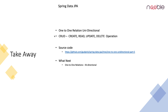Now the main takeaways: we have spoken about one-to-one relation which is unidirectional, we have spoken about the entire CRUD operations which is create, read, update, and delete, and we have seen the demo also. I am leaving the entire source code in my GitHub repository, the link for which I have given here. In the next video we will be discussing about bidirectional one-to-one relation. Thank you, thanks for watching.